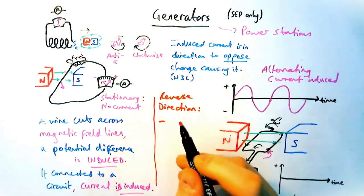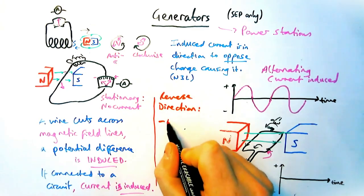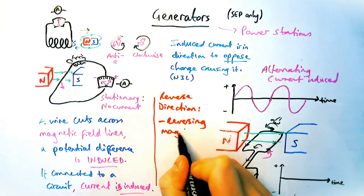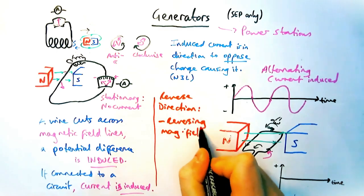That's obviously a bit harder to do because you have to change your magnets around, but either of them would work to reverse the direction of the current or the PD induced in our generator.